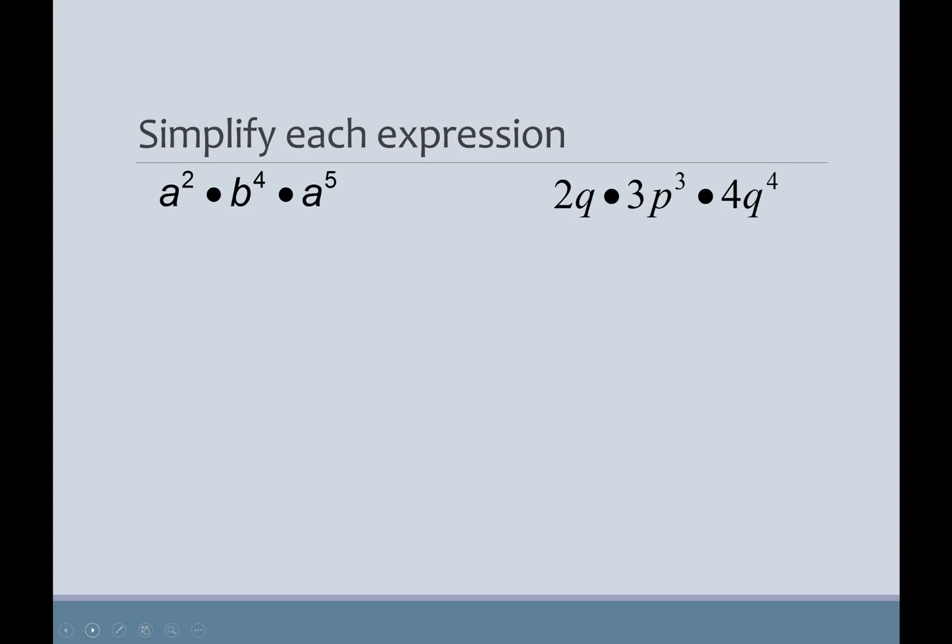Let's do a couple more. Notice now that I've got A's and B's. So, these have different bases. So, what I'm going to do is, again, I'm going to reorder this so that my A's are together and my B is separate. And we tend to do these in alphabetical order. It just makes things neater. So, this is A to the 2 plus 5 times B to the fourth. So, I get A to the seventh, B to the fourth.